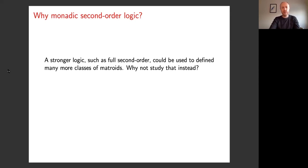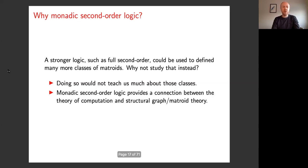The reason we don't do that is because we wouldn't learn much more about those classes. All we would learn is what we already knew — that you can write down a sentence in second-order logic that defines those classes, and that's where it would stop. I wager that most natural classes of matroids could be defined in some version of full second-order logic, but you wouldn't learn much more. Monadic second-order logic actually teaches you something, because it is a bridge between the theory of computation and the structural theory of matroids or graphs.